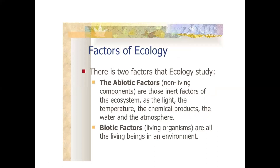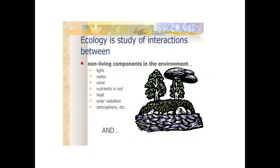In ecology, there are two components of the ecosystem: abiotic factors and biotic factors. Abiotic factors are non-living components such as light, temperature, chemical products, water, and atmosphere. Biotic factors are living organisms — plants, animals, and microorganisms. Non-living components include light, water, wind, nutrients in the soil, heat, solar radiation, and atmosphere.